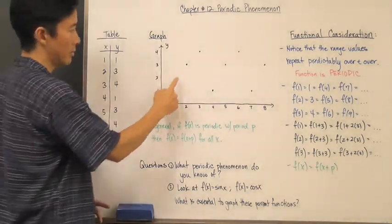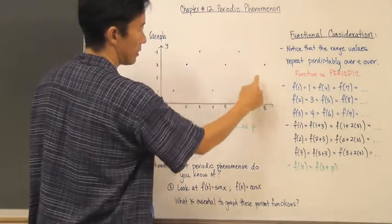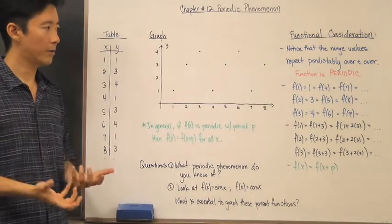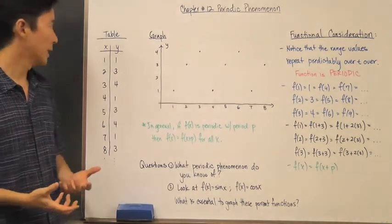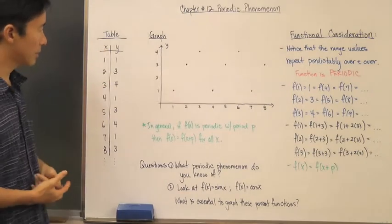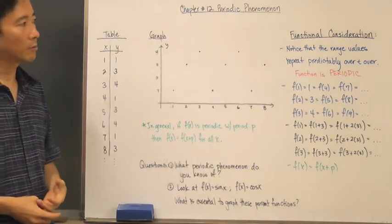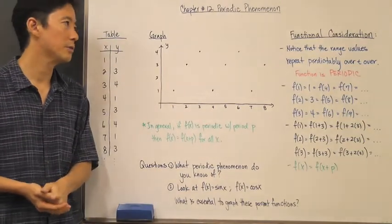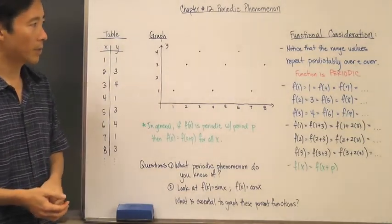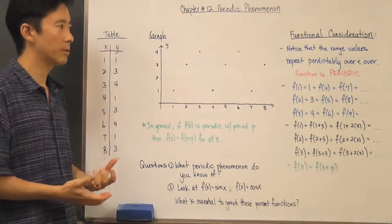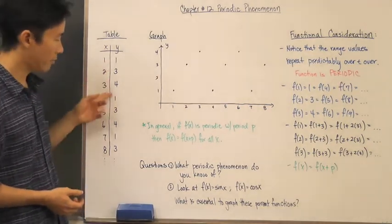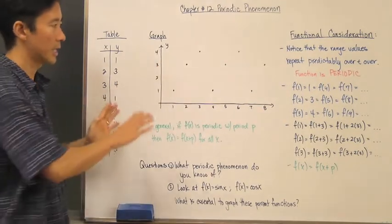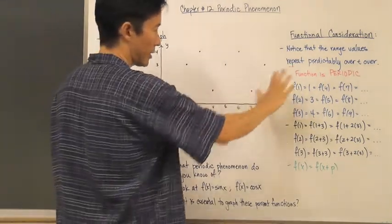When you take a look at the graph you should be able to see that repetition as well — it goes one, three, four, one, three, four, one, three, four. So what we have now is a very visual pattern on the graph, also represented by the table. What we want to do is put some functional notation to this pattern, and notice that the range values repeat predictably over and over: one, three, four, one, three, four.